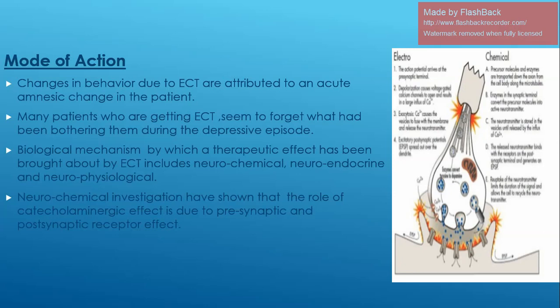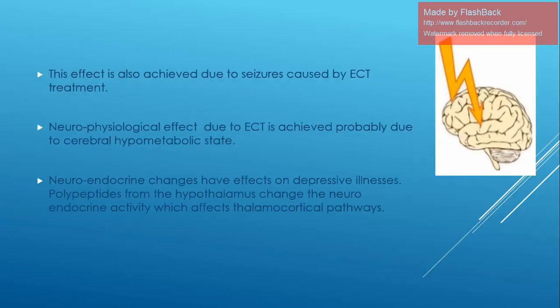The excitatory postsynaptic potential spreads over the dendrites. Precursor molecules and enzymes are transported down the axon from the cell body along microtubules, and enzymes in the synaptic terminal convert the precursor molecule into active neurotransmitter. The neurotransmitter is stored in vesicles until released by the influx of calcium. The released neurotransmitter binds with receptors on the postsynaptic terminal and generates excitatory postsynaptic potential. Reuptake of neurotransmitter limits the duration of signals and allows the cell to recycle neurotransmitter. This effect is also achieved due to the seizure caused by ECT.